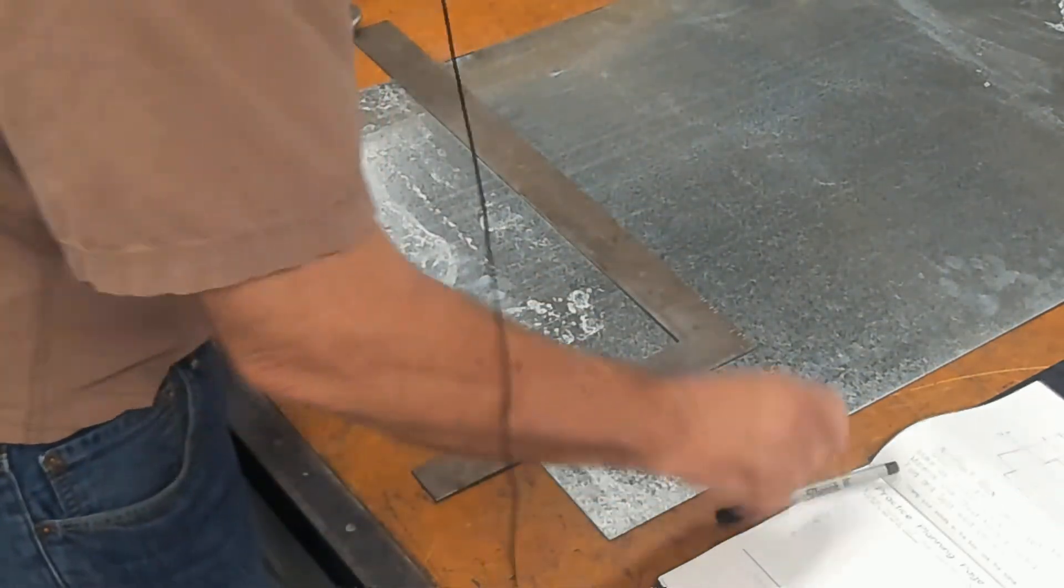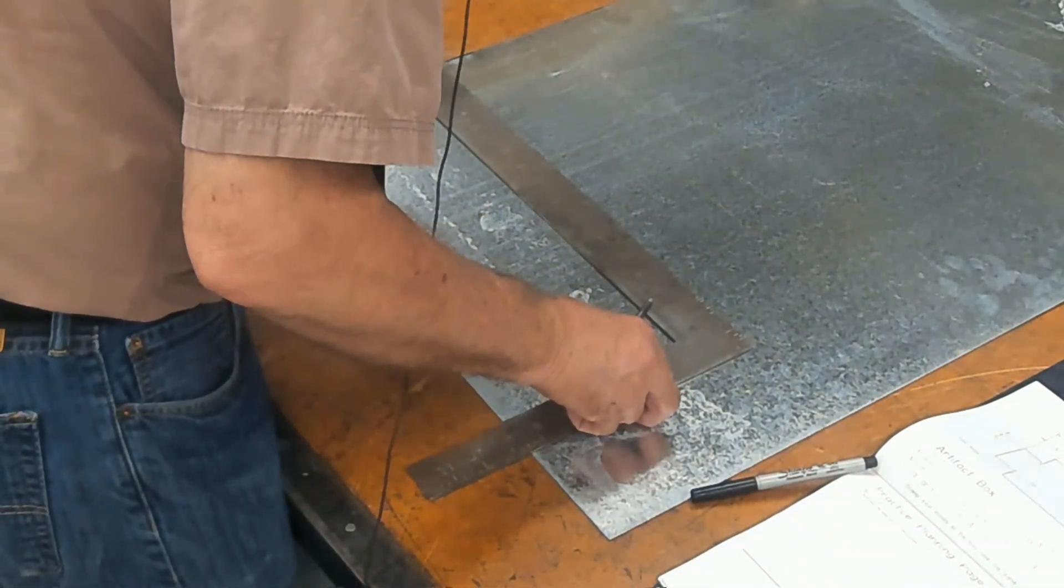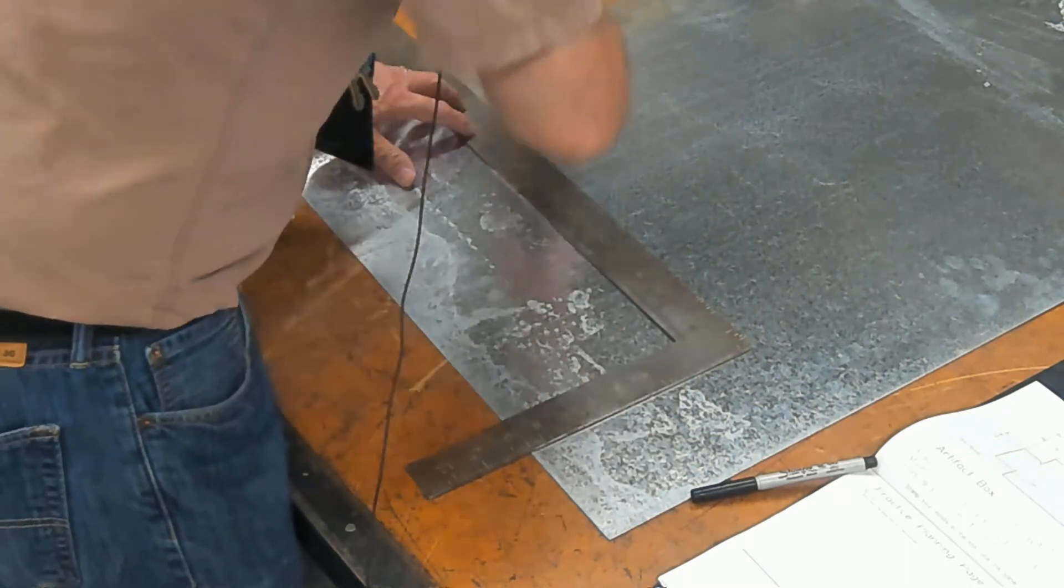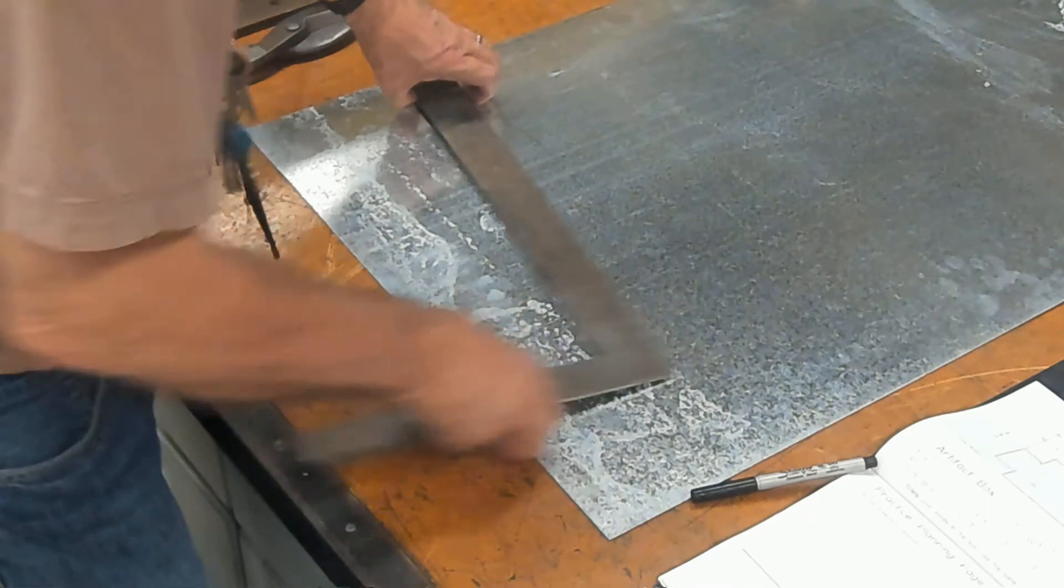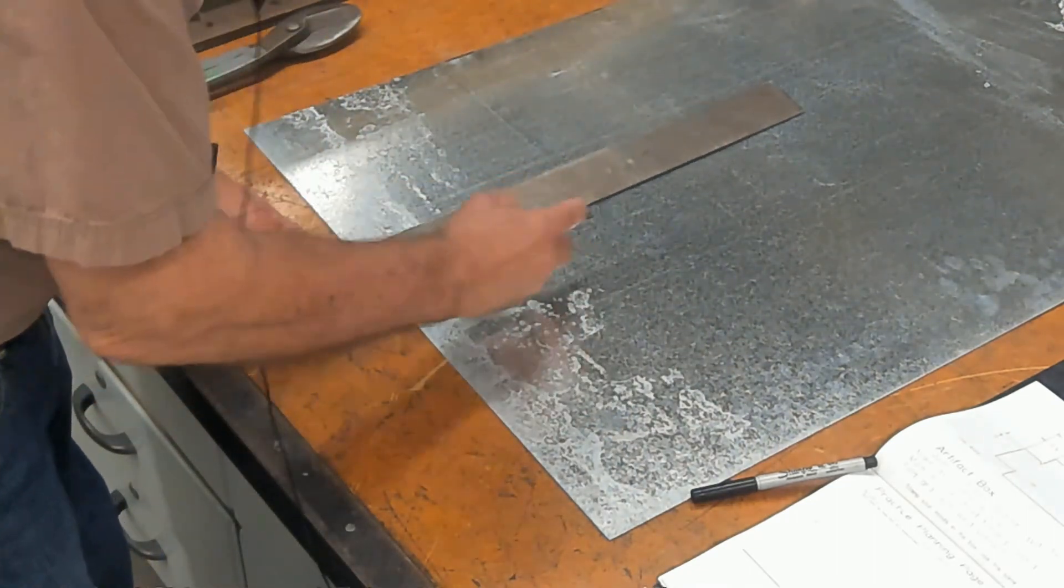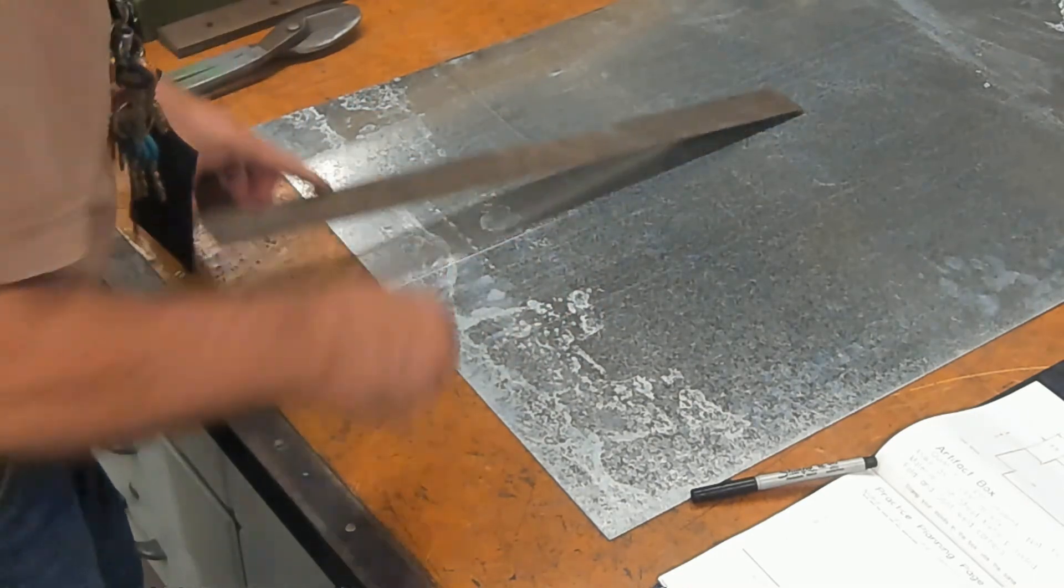If you want to be really accurate, you can actually scribe the line. Because it's going to be sheared, it's going to be exactly on a line. By scratching a line in here, I can be super accurate.